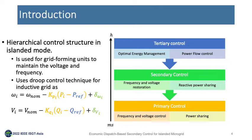Assuming an inductive grid, which can be ensured using a virtual impedance control loop, the primary control level maintains frequency and voltage stability in addition to power sharing between units. The secondary control restores frequency and voltage to their nominal values. Finally, the tertiary control level ensures economical operation and power flow with the main grid during grid-connected mode, with time scales varying from milliseconds to hours.